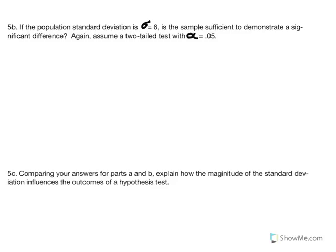Part 5B: if the population standard deviation is 6, is the sample sufficient to demonstrate a significant difference? Assume two-tailed alpha equal to 5%. Using the same statistics, we're testing the hypothesis with lesser population variability to see the effect on our conclusions. Population mean is 80, sample average is 76, standard deviation is now 6 instead of 12, and sample size is still 16.